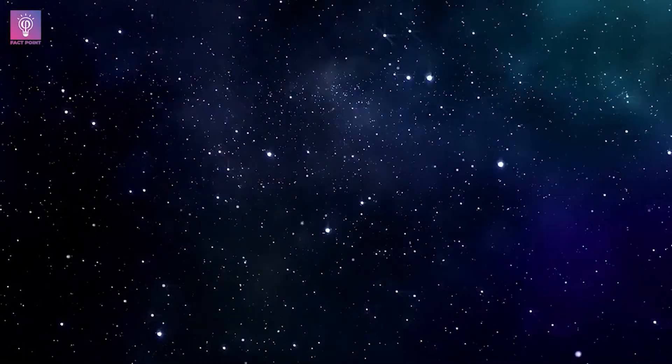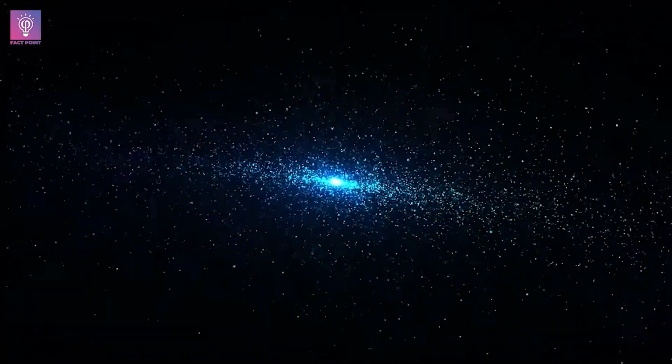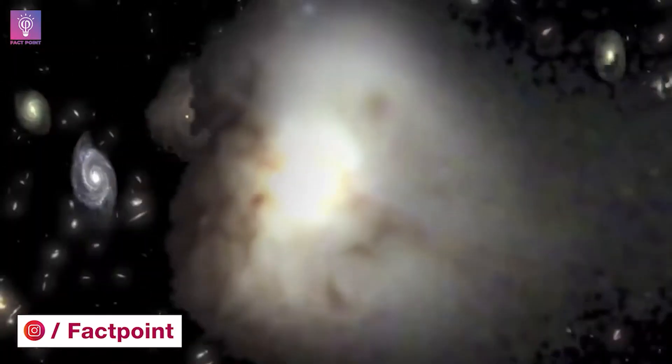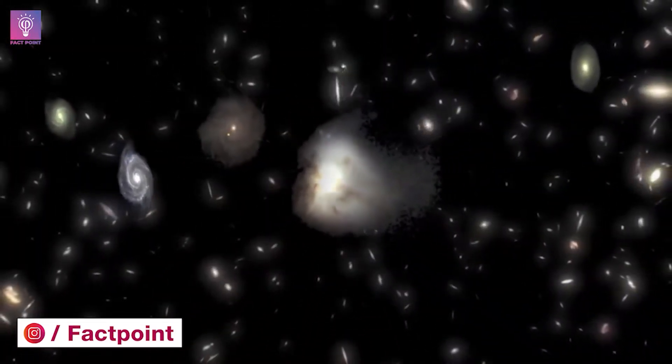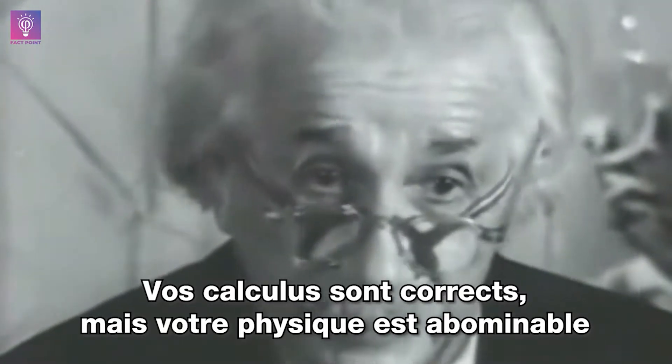So when the Belgian priest and scientist Georges Lemaitre in 1927 put forth the idea that the space-time fabric of the universe could be very large and would continue expanding, since it had emerged from a smaller, denser, more uniform state in the past, Einstein wrote back to him: 'Vos calculs sont corrects, mais votre physique est abominable,' which means, 'Your calculations are correct, but your physics is abominable.'